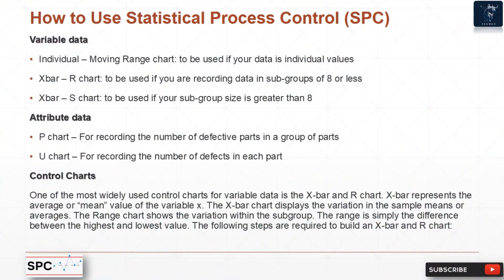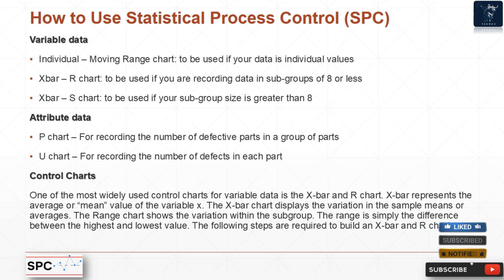Some general guidelines for chart selection: For variable data — use an Individual Moving Range (I-MR) chart for individual values; use an X-bar and R chart for subgroups of eight or less; use an X-bar and S chart for subgroup sizes greater than eight. For attribute data — use a P chart for recording the number of defective parts in a group, and a U chart for recording the number of defects in each part.